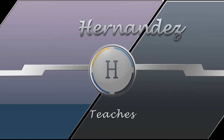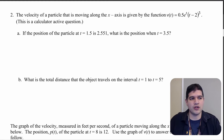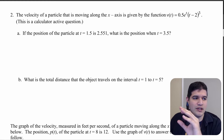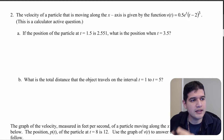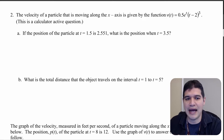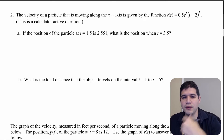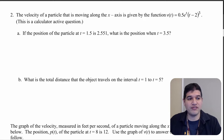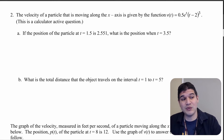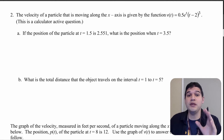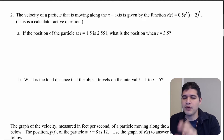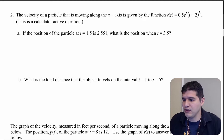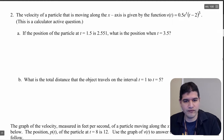In this first question we're given the velocity of a particle and the function is 0.5e to the t times (t minus 2) to the third power. We know the position of the particle at t equals 1.5, but we want to find what the position is when t equals 3.5. We did a problem like this — see if you can set it up the same way.